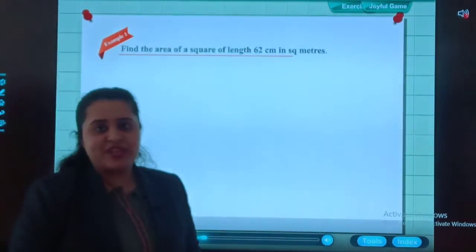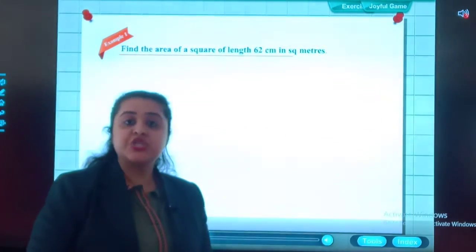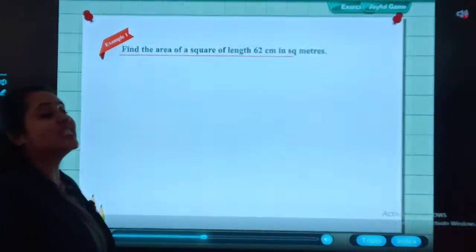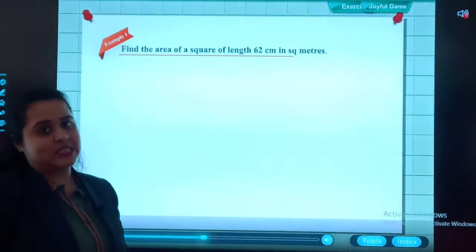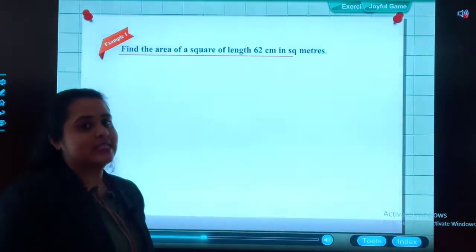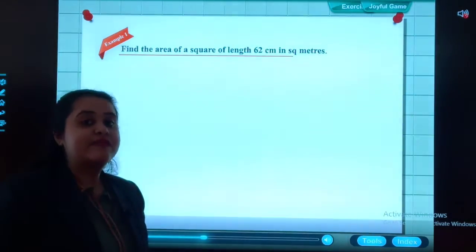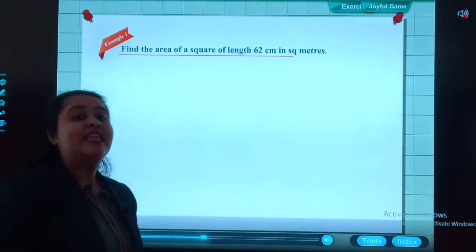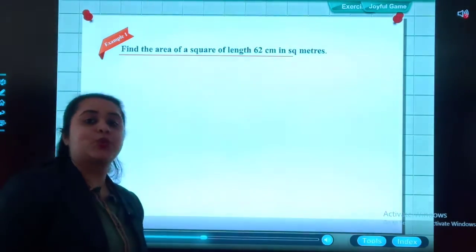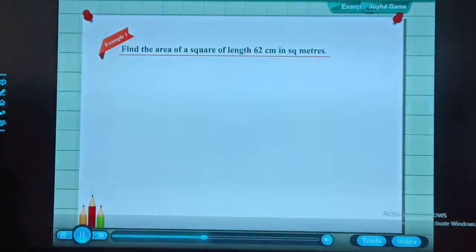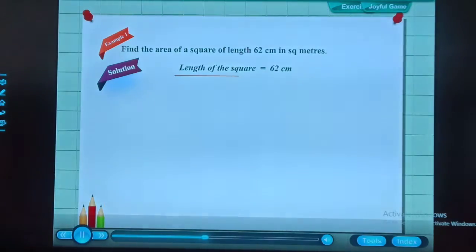Let's solve one example. The question is, find the area of a square of length 62 centimeters. Now we will be applying the formula: area of square equals length into length, 62 into 62. Solution: length of the square is equal to 62 cm. Area of the square is equal to 62 × 62 = 3844 sq cm.